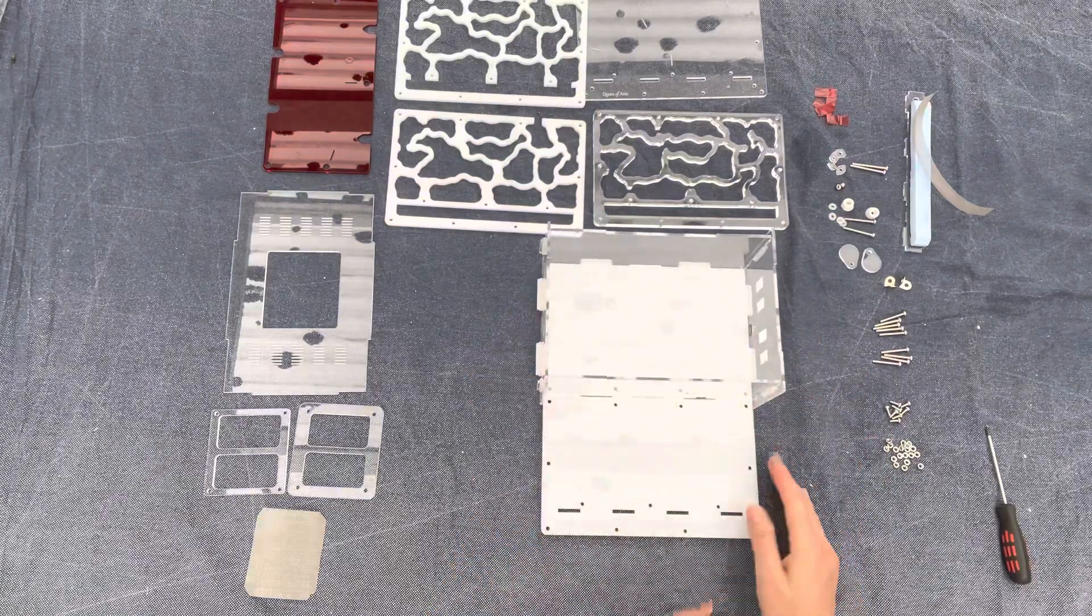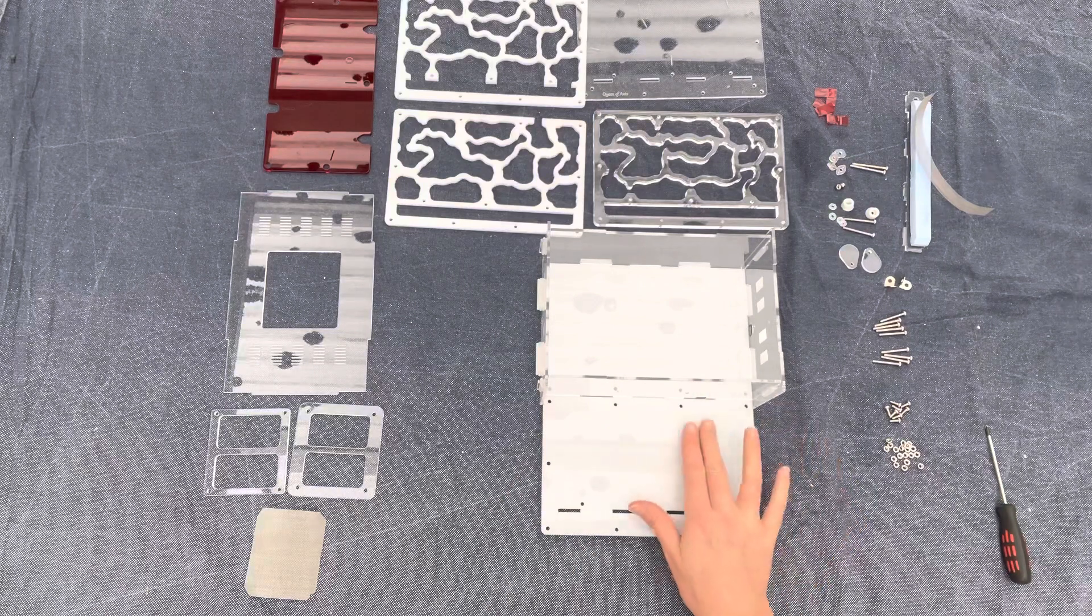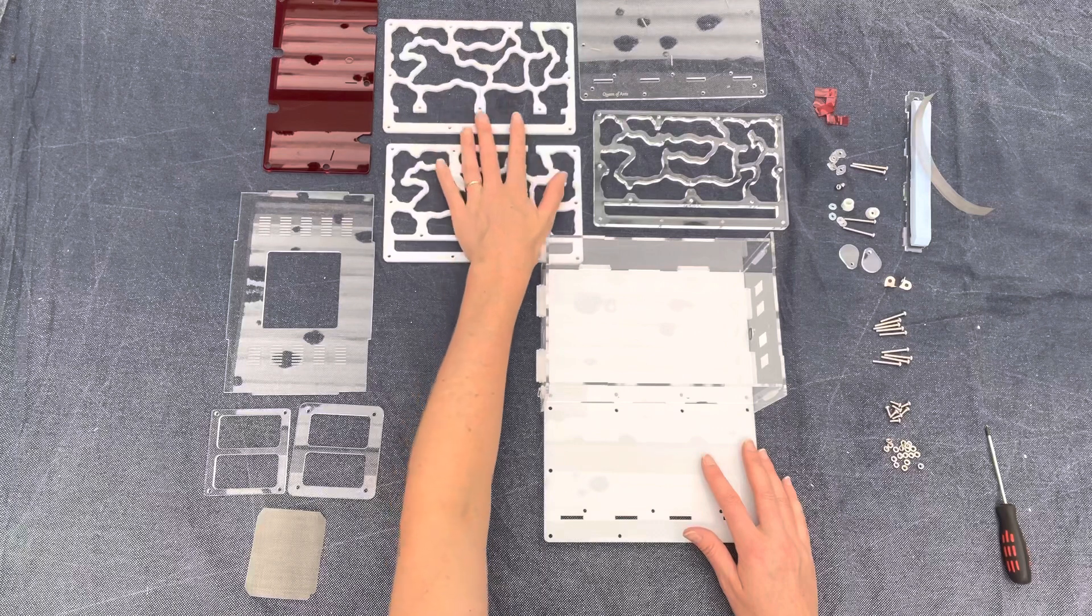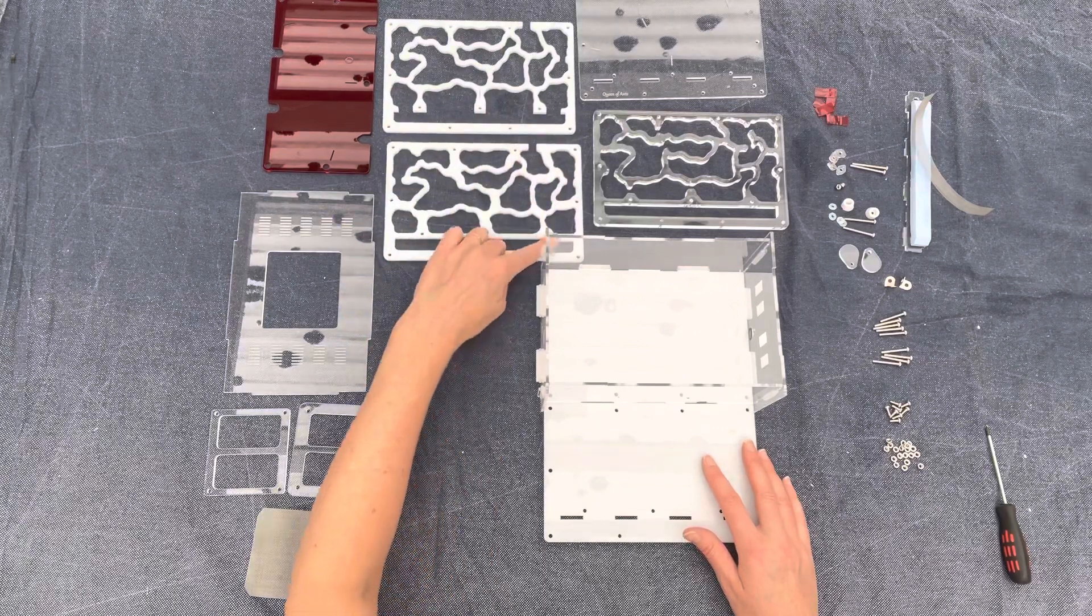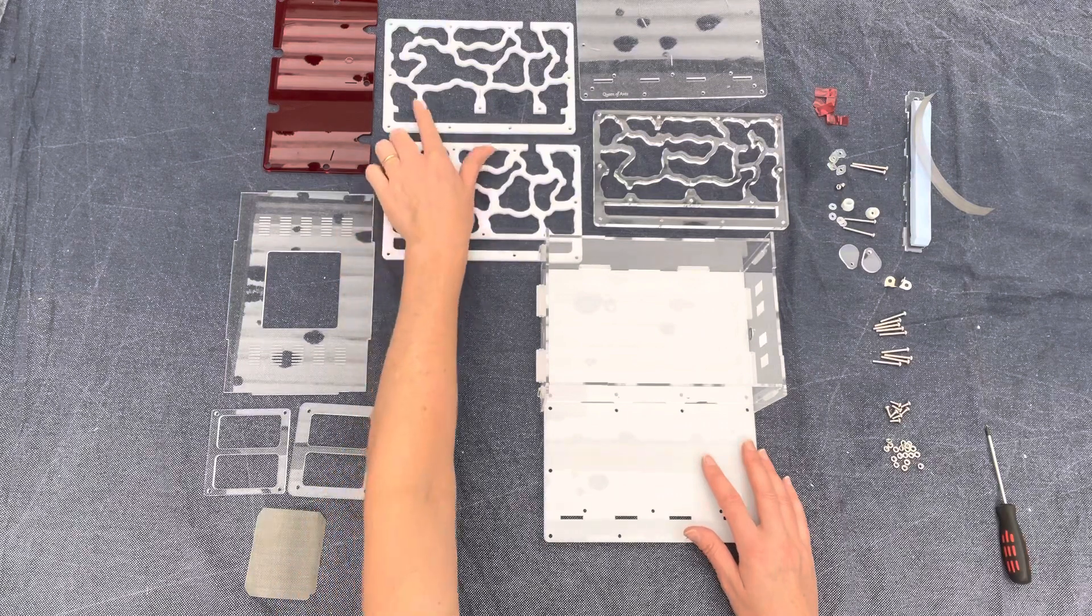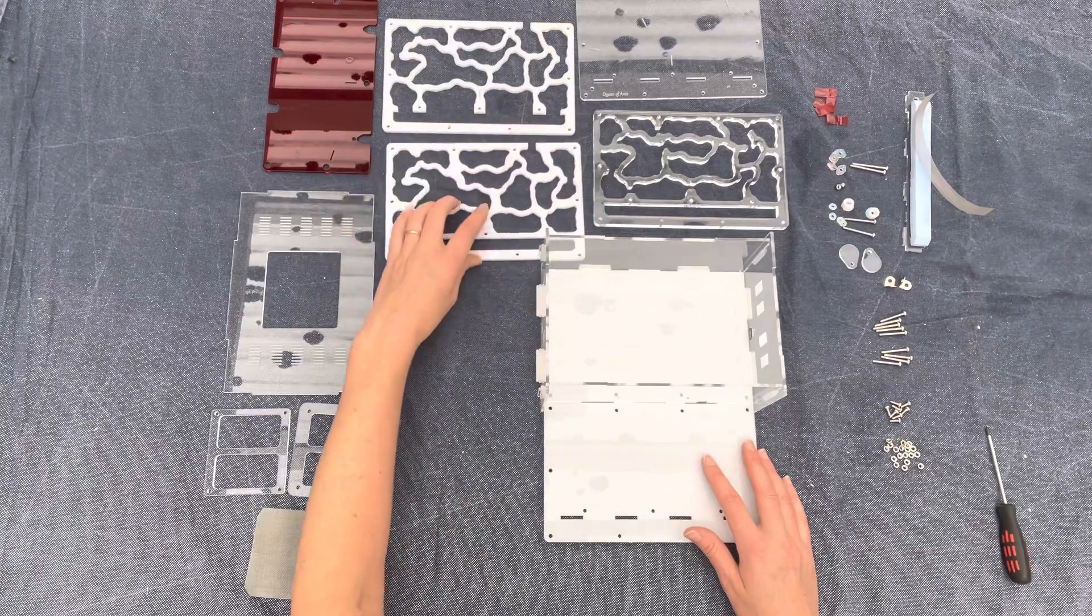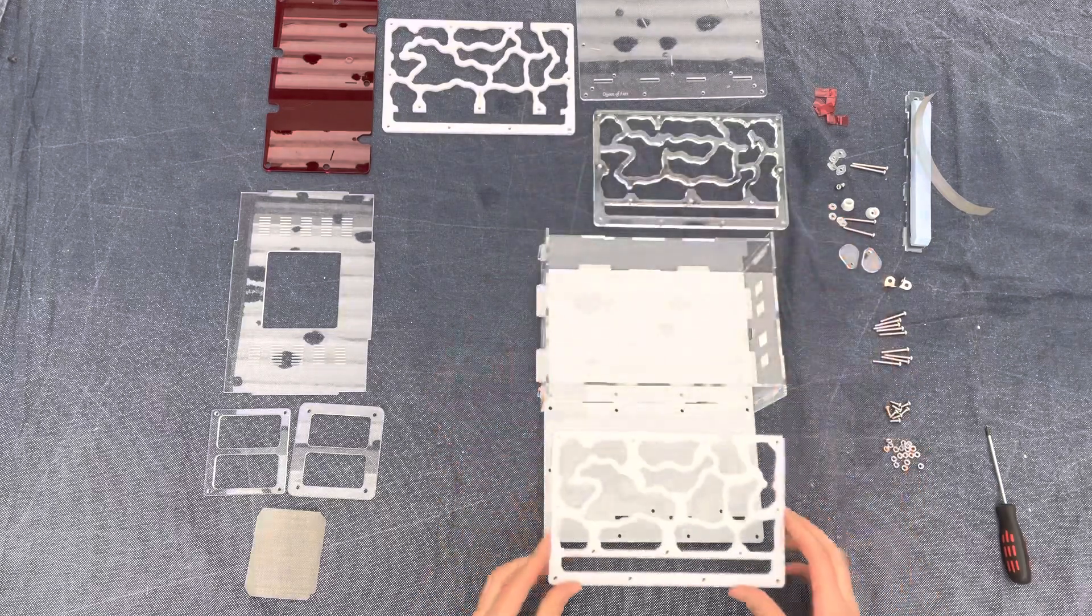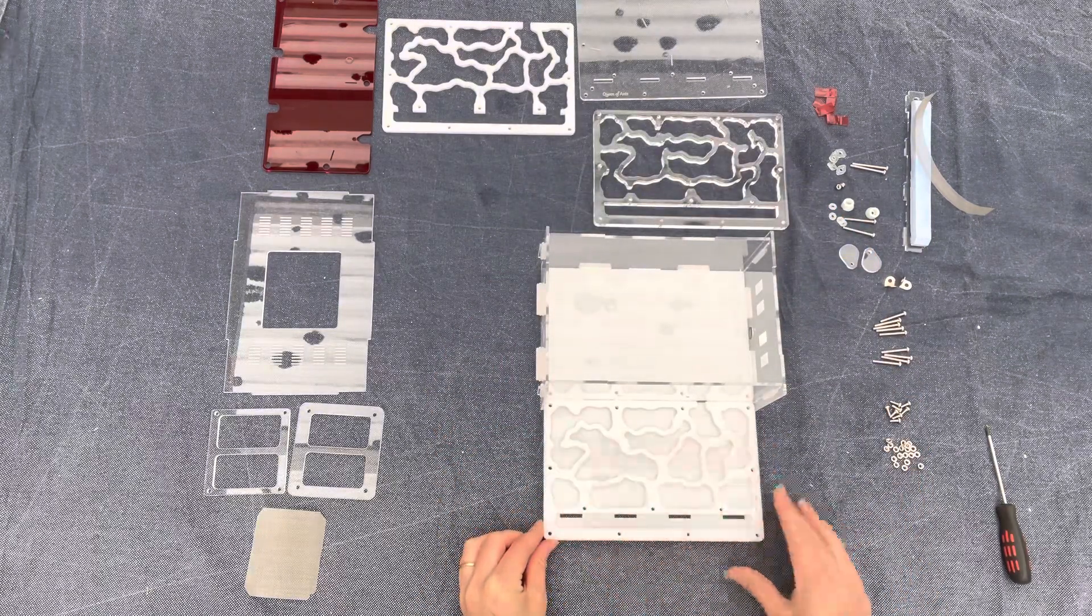We're going to move on to the nest section now. You'll have two white acrylic nest pieces. One will have a full line of acrylic here at the end where the sponge goes and one will have gaps. You want to put the one that is fully enclosed here at the bottom. Just gently sit it there and it should line up with the holes on the base plate.